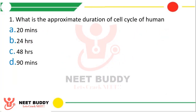Question 1: What is the approximate duration of cell cycle for humans? Option A: 20 minutes. Option B: 24 hours. Option C: 48 hours. Option D: 90 minutes. The correct answer is Option B, that is 24 hours.